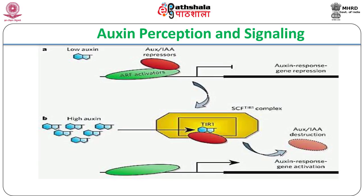Two transcription factors, namely Aux/IAA proteins and auxin response factors or ARFs, form dimers and bind to the auxin response elements present in the promoters of auxin-regulated genes. In the absence of IAA, Aux/IAA proteins act as repressors which inhibit the transcription factors ARFs from activating transcription of auxin response genes.